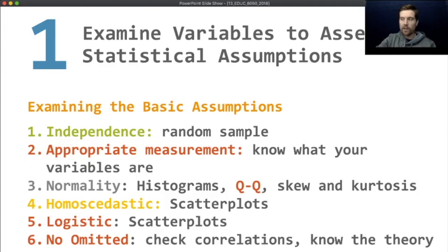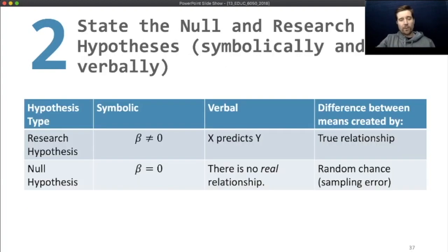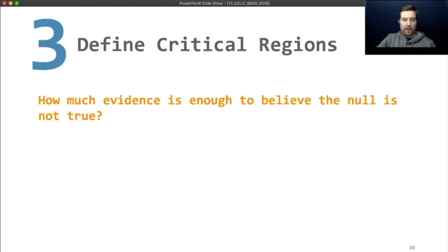We can kind of go back and think about the causality discussion we had in week 12. These are no different. We can assess all these things normally. Homoscedastic is scatterplots, but it's still very difficult with logistic regression. Logistic can be with scatterplots. And then no omitted is checking correlations. Know the theory. What, according to theory, should we be including in there? For the scatterplots, what I would recommend is for logistic you want to see would any form of an S fit a lot of those points. Just like regression, we're testing if the slope is different from zero. We're going to use an alpha of 0.05.